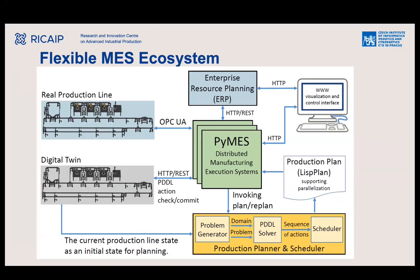At the heart of the system is a PIMAS implementation of a manufacturing execution system developed here at CIIRC. This is the glue connecting all production components. Using OPC UA communication protocol, it connects to real machines through a digital twin that formalizes the states of individual components. Those states are used to formulate a planning problem solved by a planner and scheduler, which creates a specific plan executed by PIMAS on the real machines.